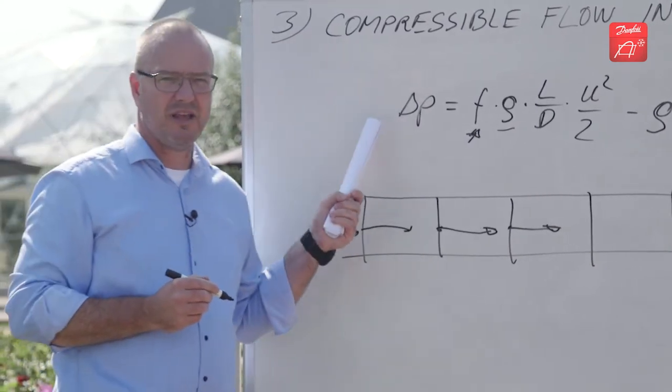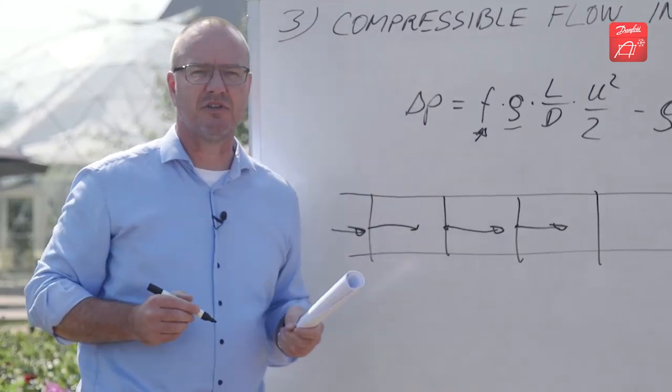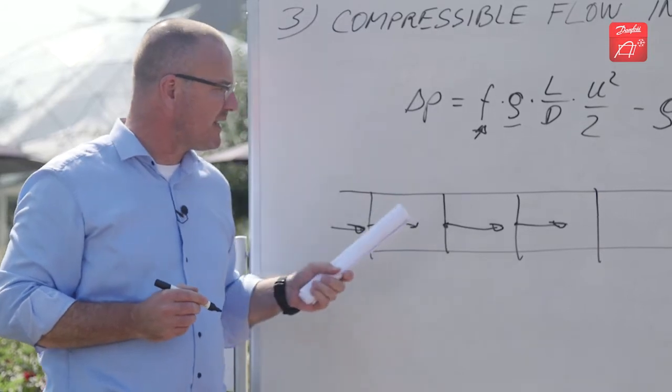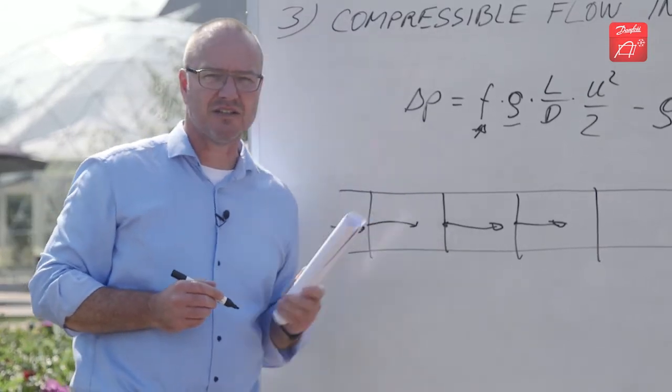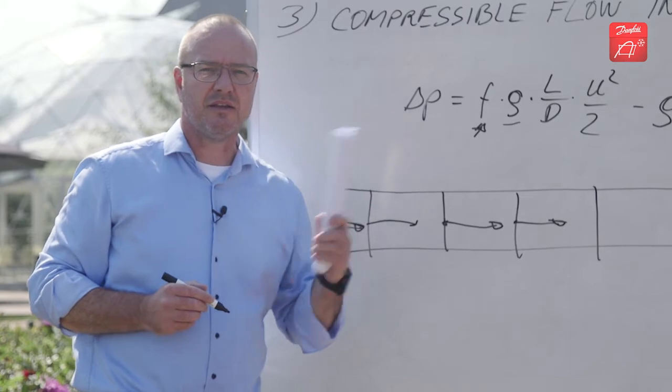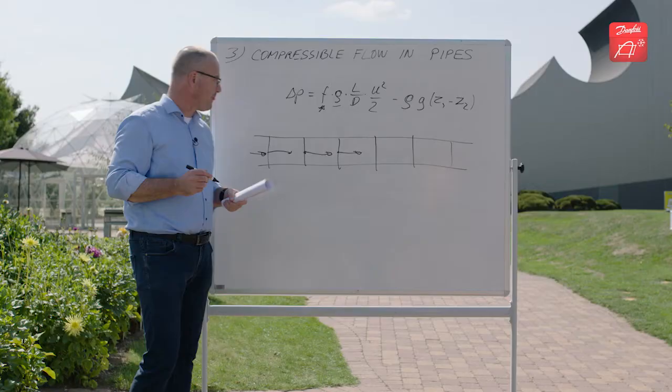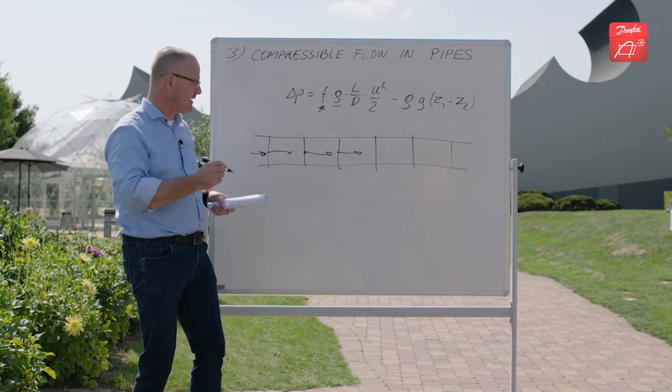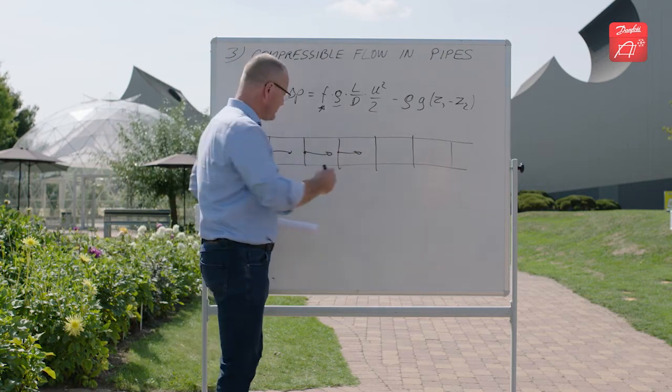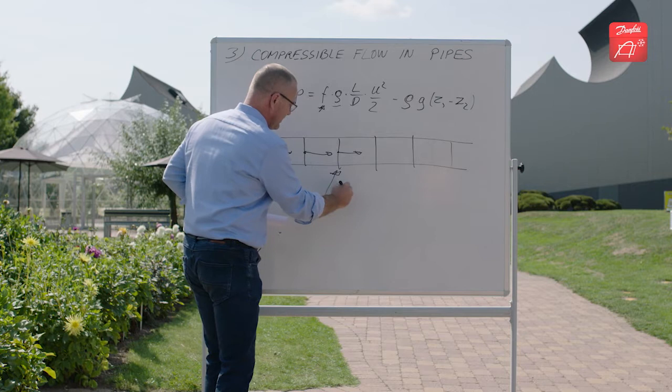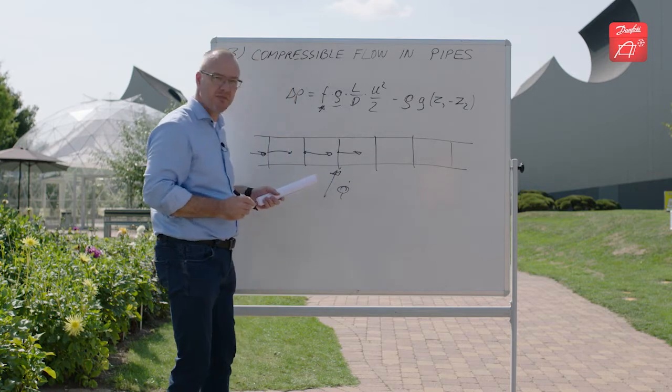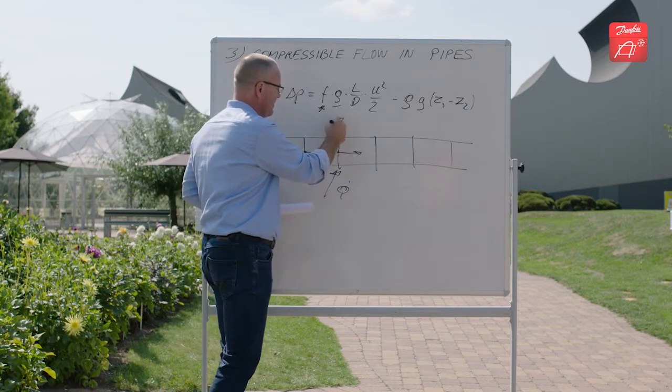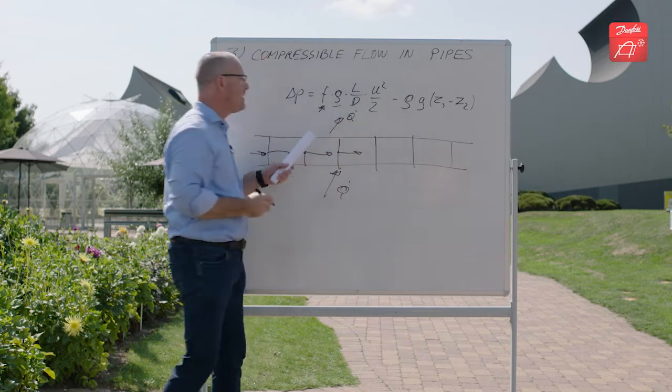Normally you only have long gas pipes in large industrial systems where you have hot gas defrost and you take the discharge gas from the compressor and lead it to the evaporator. When you do that and have a long gas pipe like this, you also have to take into account that there might be some heat coming into the pipe or heat coming out of the pipe.